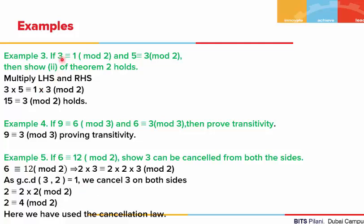In example 3, we are given 3 is congruent to 1 mod of 2 and 5 is congruent to 3 mod of 2. We have to show the multiplication property of Theorem 2: multiplying the left-hand sides of two congruences will be congruent to the product of the right-hand sides. Here, 3 times 5 is 15 and 1 times 3 is 3: 15 is congruent to 3 mod of 2. This holds.